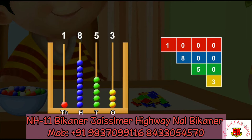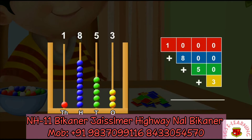And three beads in the ones spike represent three. So we can say the number represented by Sid on the abacus is one thousand plus eight hundred plus fifty plus three, which is equal to one thousand eight hundred fifty-three.